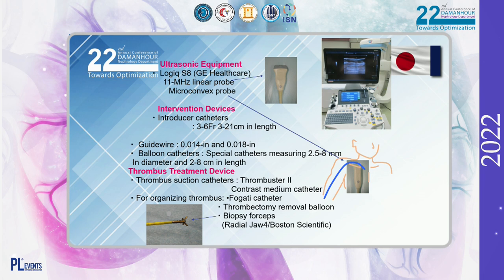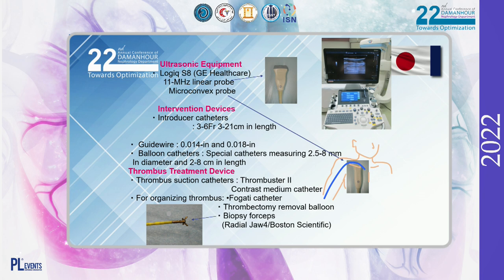These are the devices used during the procedures. For ultrasound, we mainly used GE Healthcare Logiq S8 with even-megahertz linear probes. The jugular and brachiocephalic vein regions were visualized using a microconvex probe from the intercostal or supraclavicular region. Guide wires used were mainly between 0.014 and 0.018 inches. Balloons were a special type, 2.5 to 7 mm in diameter and 2 to 8 cm in length.